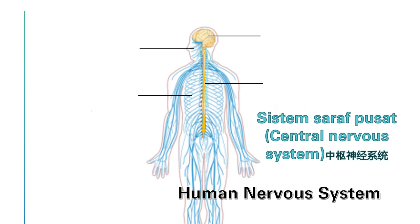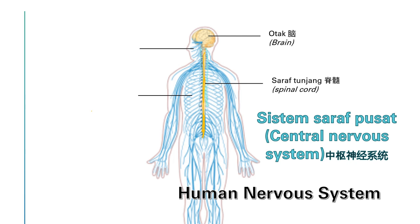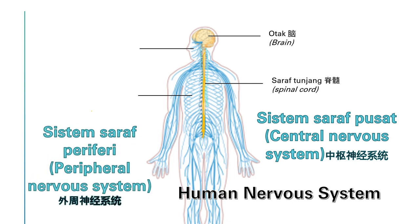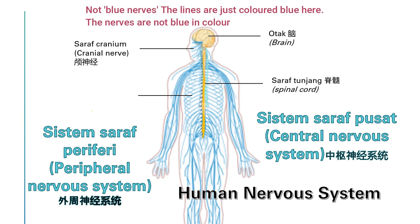The first component is called the central nervous system, which consists of the brain and the spinal cord. The second component is the peripheral nervous system, which is composed of two parts: first, the cranial nerves — nerve cells which connect from the brain to the organs in the face. We have 12 pairs of cranial nerves, 12 on the left and 12 on the right.